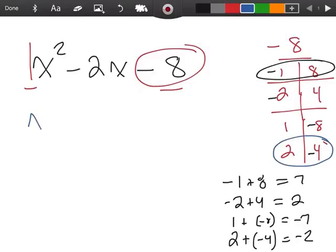Right? So, then I would say, look, this is now going to factor into x and x and we're going to go with a positive 2 and a negative 4. Right?